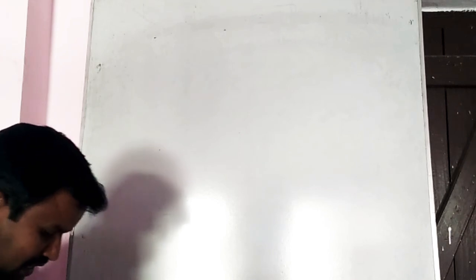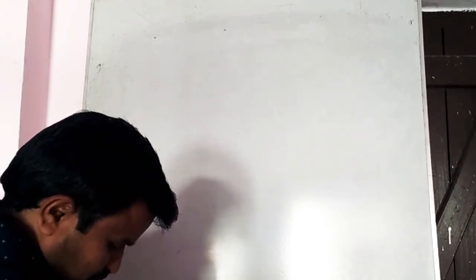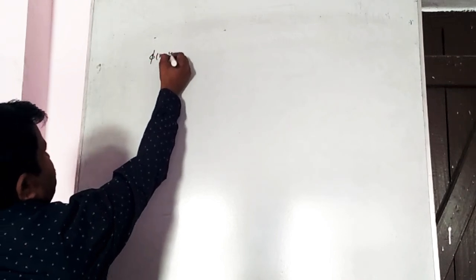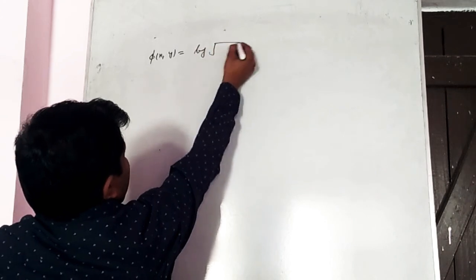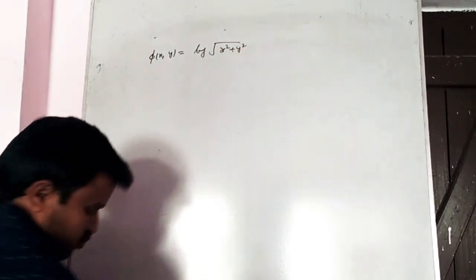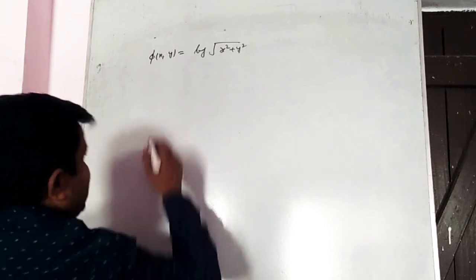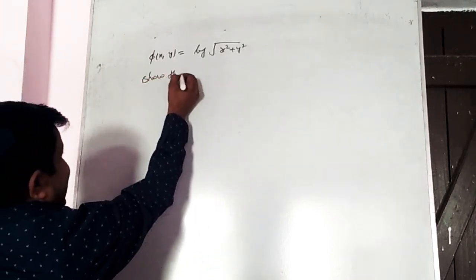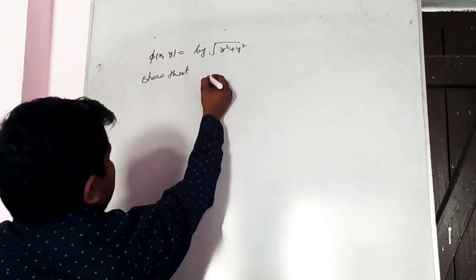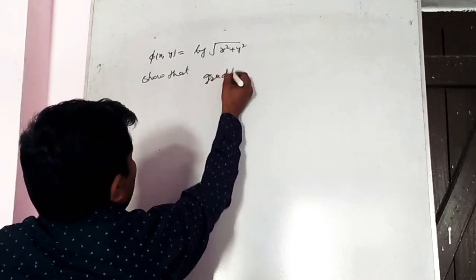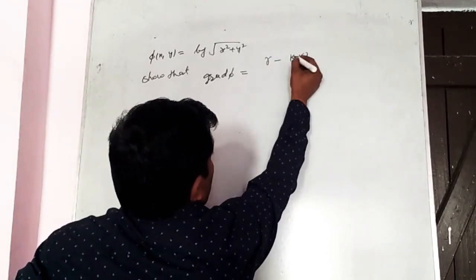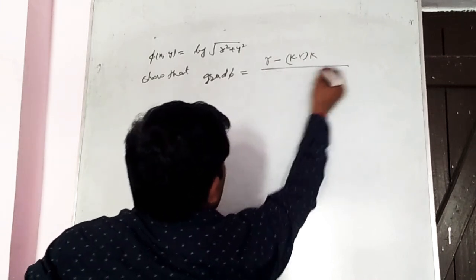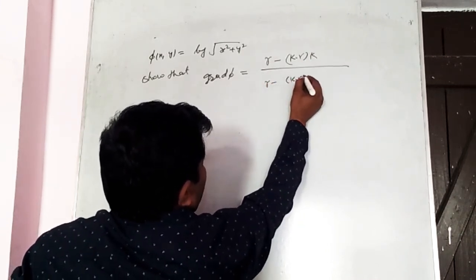Next numerical: φ(x, y) = log√(x² + y²). Find grad φ. So grad φ = r⃗ − (k·r⃗)k, divided by |r⃗ − (k·r⃗)k|. We simplify: φ = (1/2)log(x² + y²). The position vector r⃗ = ix + jy + kz.